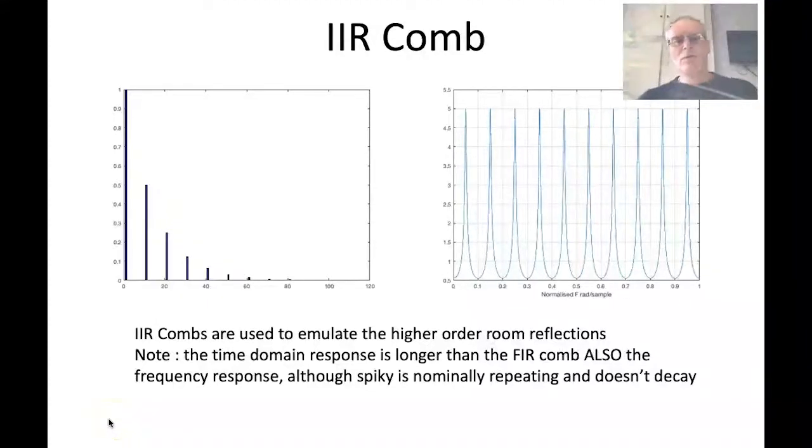IIR comb filters are often used to emulate high-order room reflections. The reason is because they're recursive, there's a feedback element into the filter, and we get a time domain impulse response as we can see here.